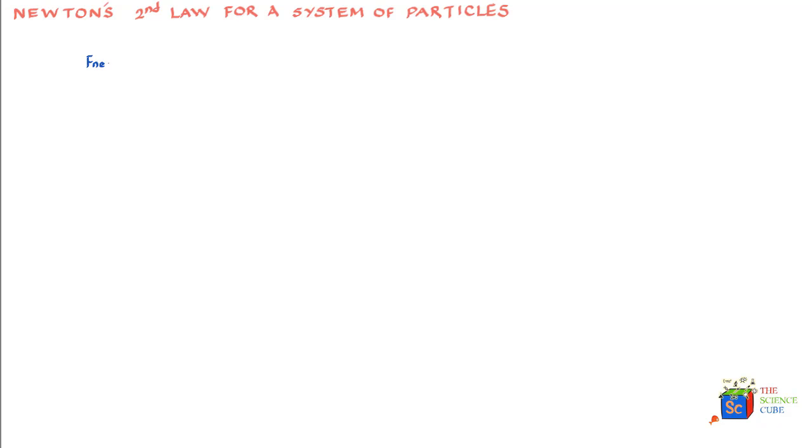We know that Newton's second law of motion says that the net force acting on a particle is equal to the product of the mass of the particle and the acceleration that is induced by this net force. Now what's interesting is that Newton's second law of motion is applicable to a system of masses as well.